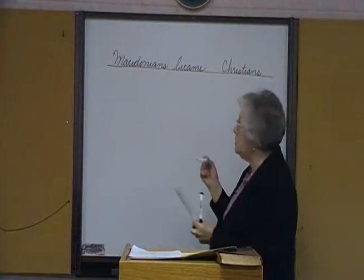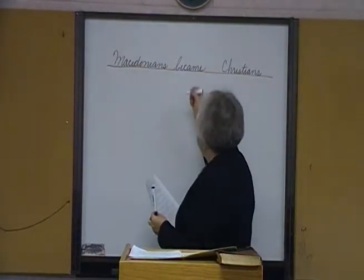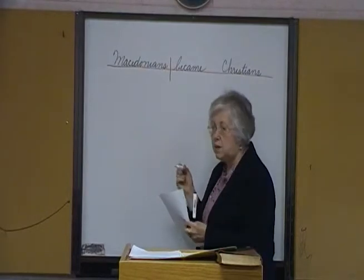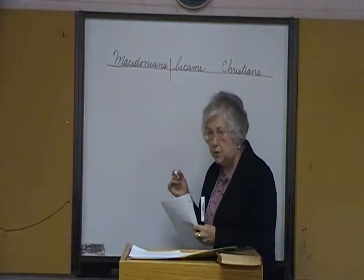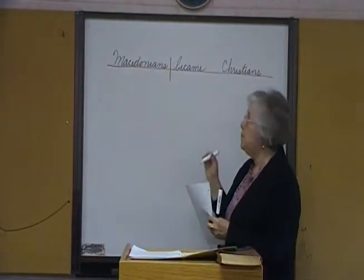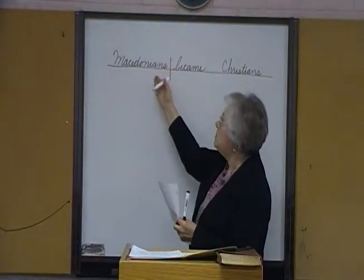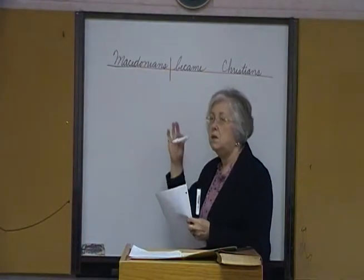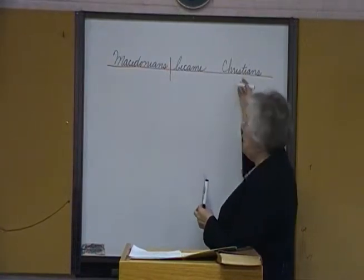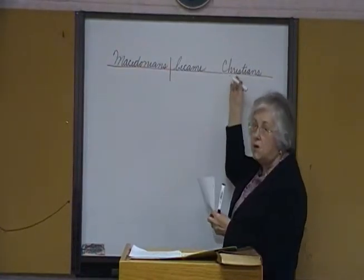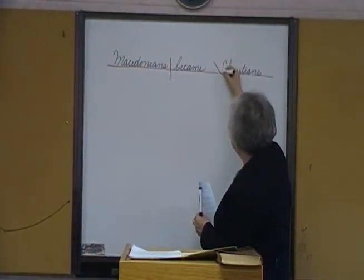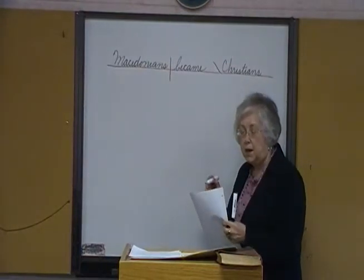Now let's do the divisions. Vertical line all the way through, separating the subject and the verb. 'Became' is a linking verb. 'Christians' and 'Macedonians' are nouns — it's identifying Macedonians. Therefore we have a predicate nominative, and the line is a slanted line stopping at the baseline.